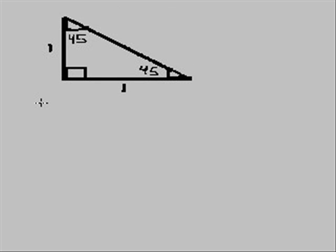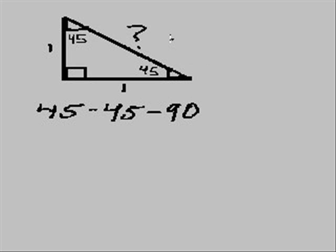And what do we get? Well, it looks to me like we get a forty-five, forty-five, ninety triangle. Two sides are equal to one and the other one is... well, what is the hypotenuse equal to? We don't know that, or do we?